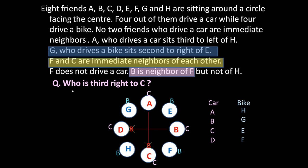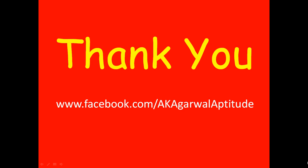Now we can answer: who is third to the right of C? C is here — counting to the right: 1, 2, 3 — so E is third to the right of C. Thank you very much for watching this video. You can also follow me on Facebook. Thank you very much.